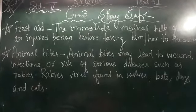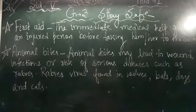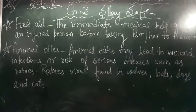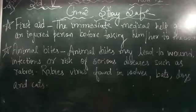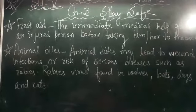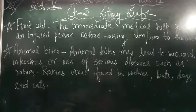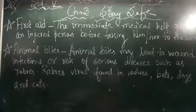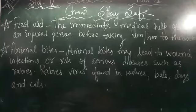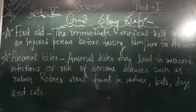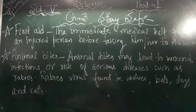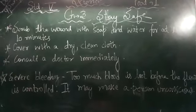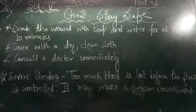Sabse pehle topic hai: Animal bites — jaanvaron ka katna. Animal bites may lead to wounds, infections, or risk of serious disease such as rabies. Rabies ek bahut bhayankar bimari hai. Rabies virus is found in bulls, bats, dogs, and cats. Yeh virus in sabhi jaanvaron mein paaya jaata hai. Agar ye jaanvar kaat le, toh kis tarah ki first aid apnaani chahiye?